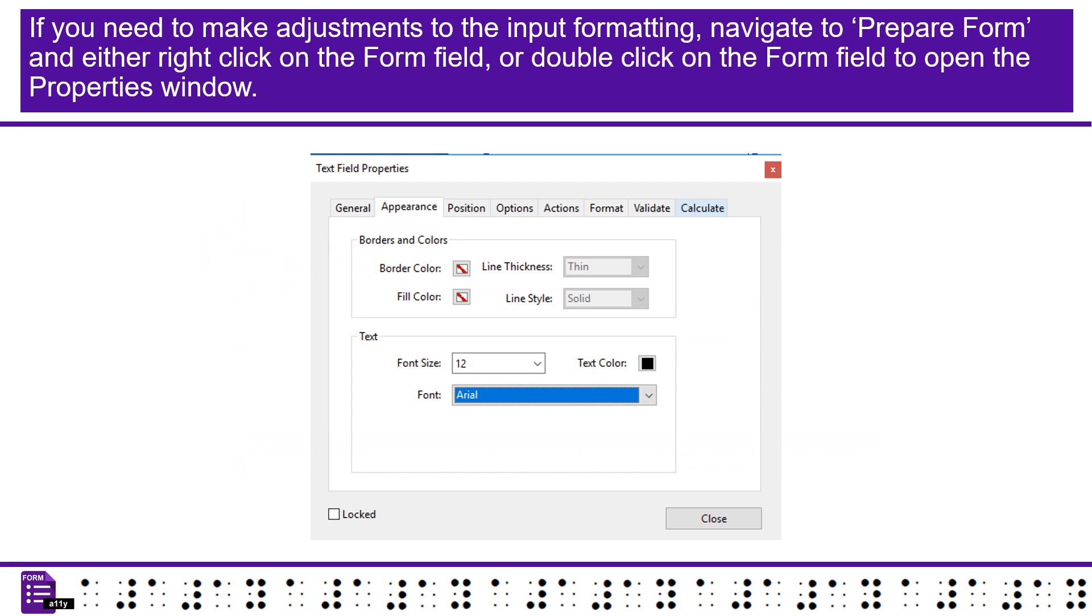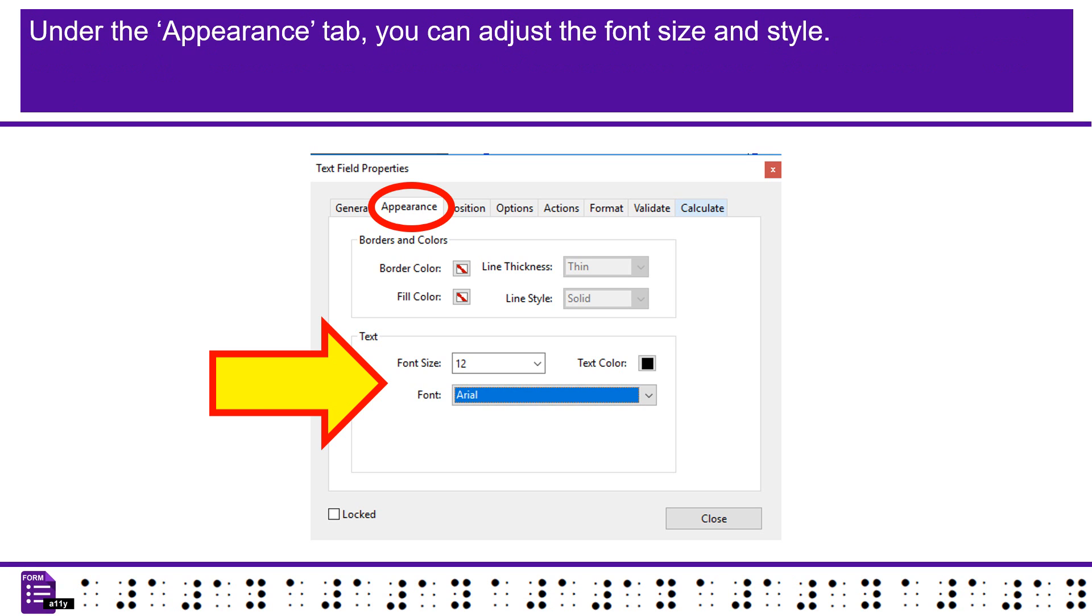If you need to make adjustments to the input formatting, navigate to Prepare Form, and either right-click on the Form field, or double-click on the Form field to open the Properties window. Under the Appearance tab, you can adjust the font size and style.